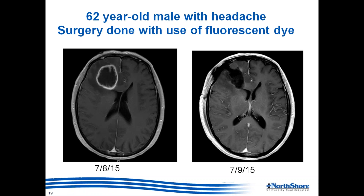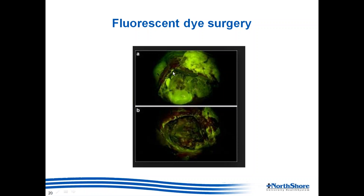One case: a 62-year-old man with headaches found to have a ring-enhancing mass in the right frontal lobe. A very nice resection was performed using a fluorescent dye injected intravenously — because glioblastomas have very abnormal blood vessels, the dye lights them up, helping the surgeon visualize tumor margins precisely and achieve a better surgical result.